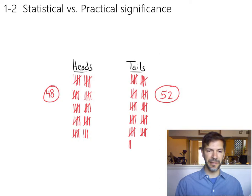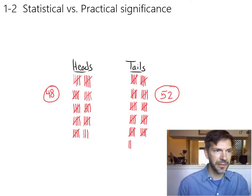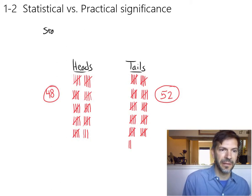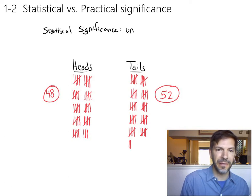What does it mean to be statistically significant? So statistical significance means, let's see here, let's say statistical significance simply means something is statistically significant if it's unlikely to happen by chance.